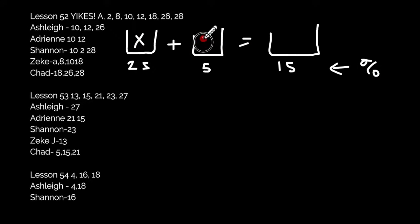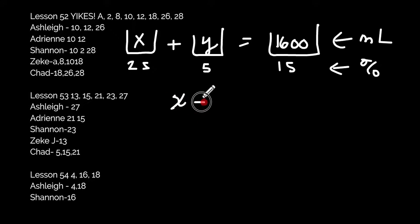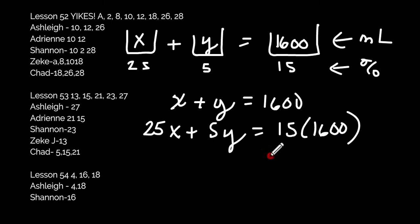We don't know how much of either solution — this is the first type of mixture problem where we don't know either amount. The total is 1,600. You'll set up two equations because you have two variables. First equation: x plus y equals 1,600. Second: multiply the percent by the amount in each bucket and set them equal. I'd suggest multiplying the top and bottom by negative 5, eliminate the y's, then find x.